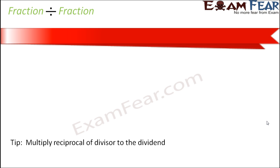Let us say that you have a very long red ribbon. You are decorating something, maybe for a competition or a festival, and the length of this ribbon is 29 by 2 meters. For decoration purposes you do not need such a long ribbon — instead you need small pieces of ribbon, each of length half a meter.